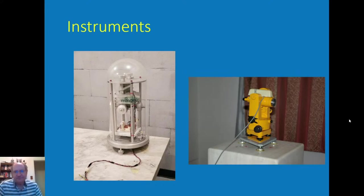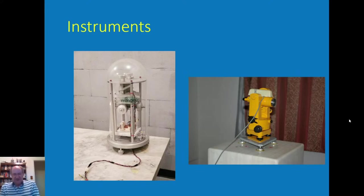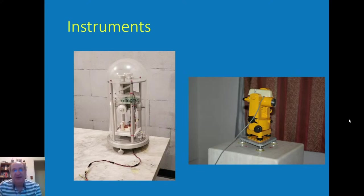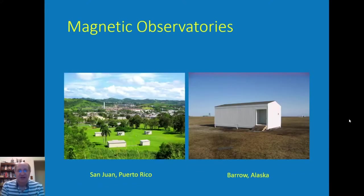We combine that with absolute measurements from the total field sensor, which helps us define the entire vector and then calibrate the data out of the fluxgate magnetometer. Here are two of our observatories.